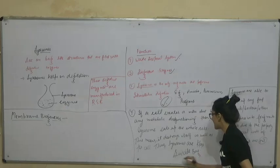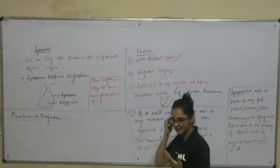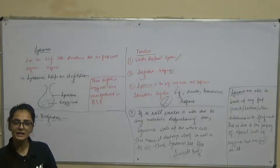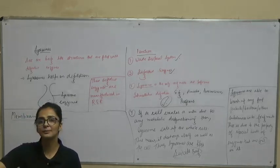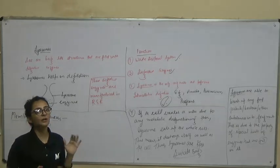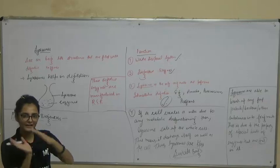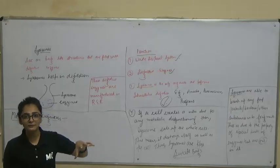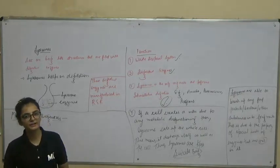Lysosomes are known as suicide bags because they are bag-like structures, and if a cell malfunctions, the lysosome bursts the entire cell — it eats the cell and bursts up itself too. If lysosomes didn't do this, the infected cell would spread infection to surrounding cells, infecting the whole tissue, then the organ, leading to organ failure. Lysosomes prevent this on a small scale, acting as the 'maid' or cleaning system of the cell.